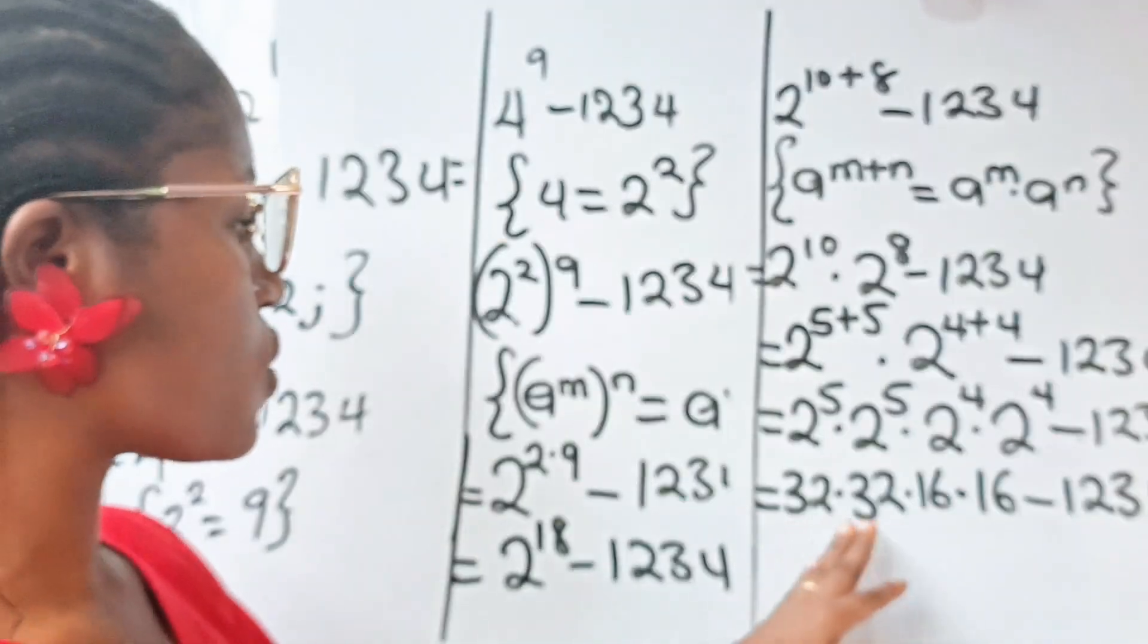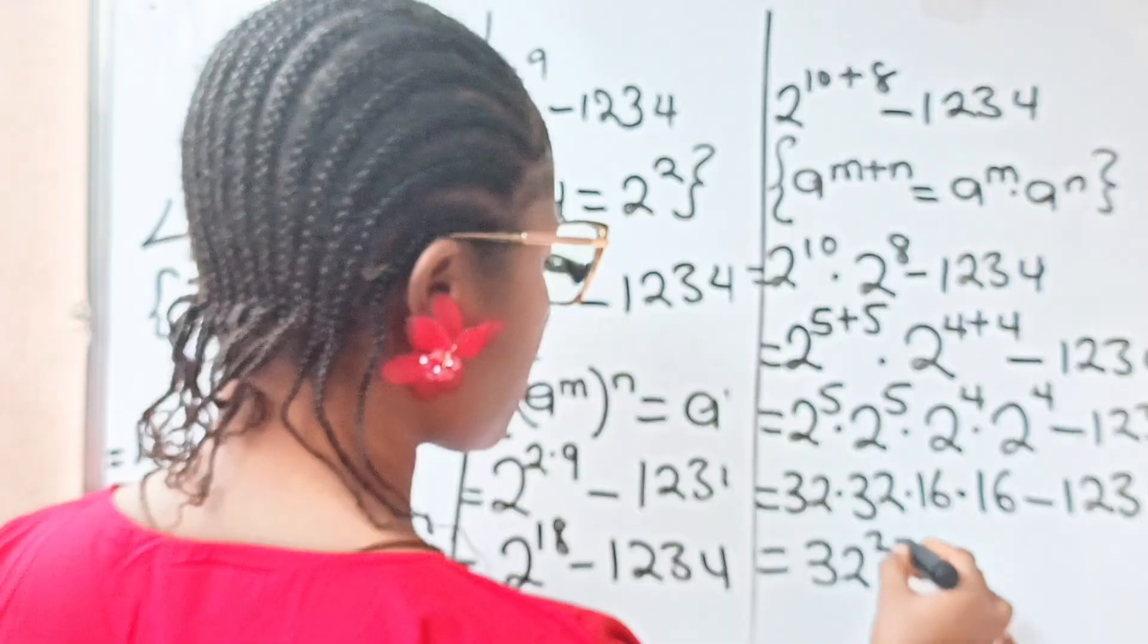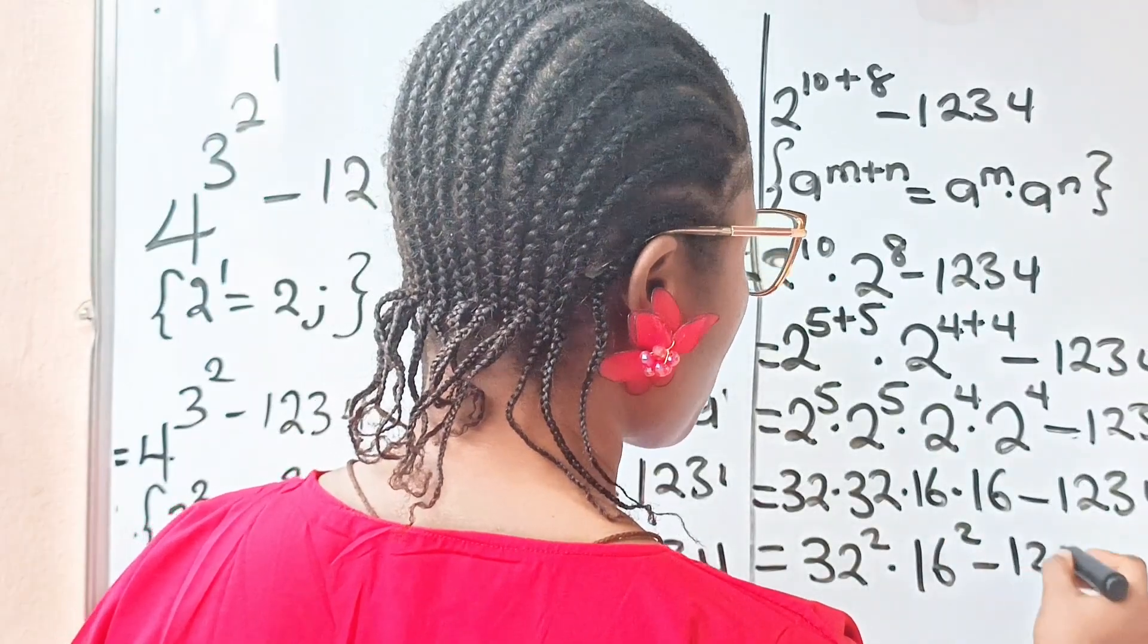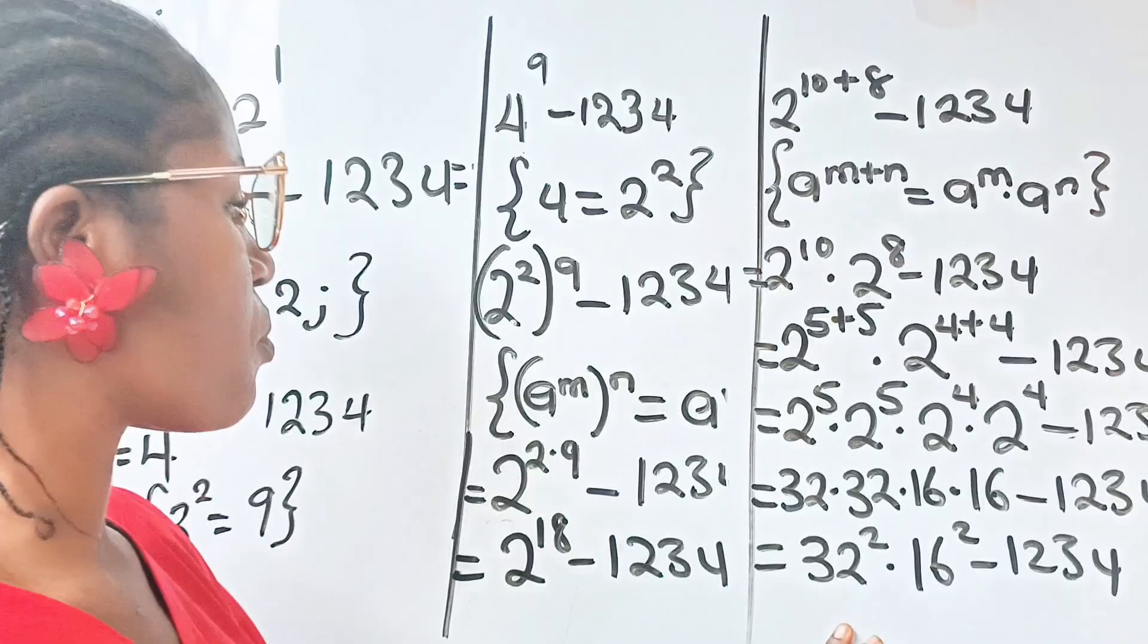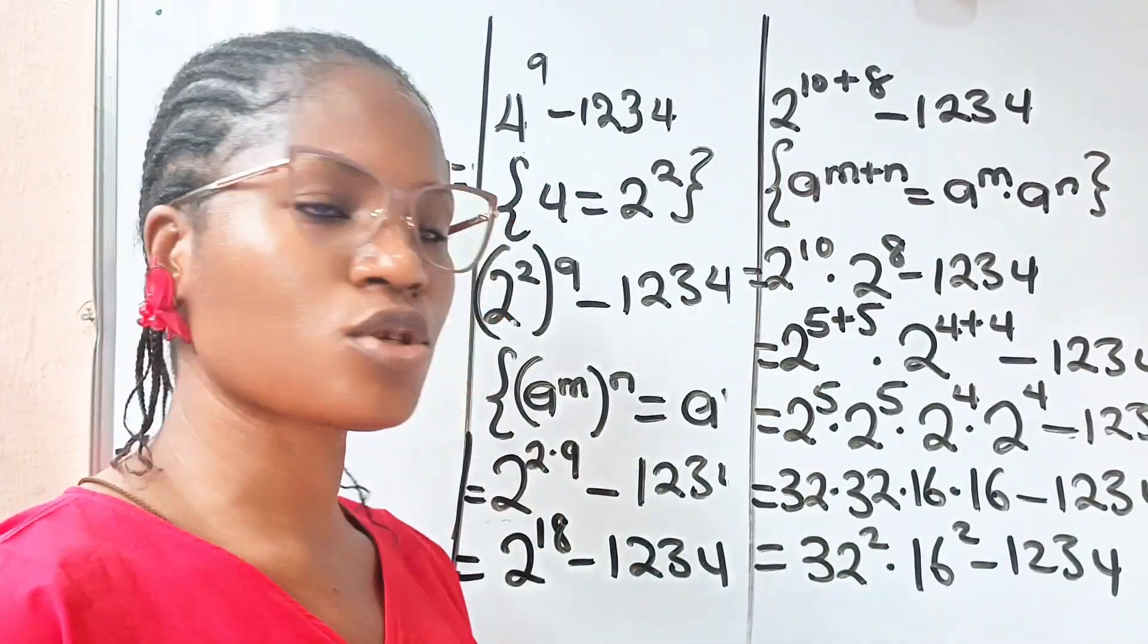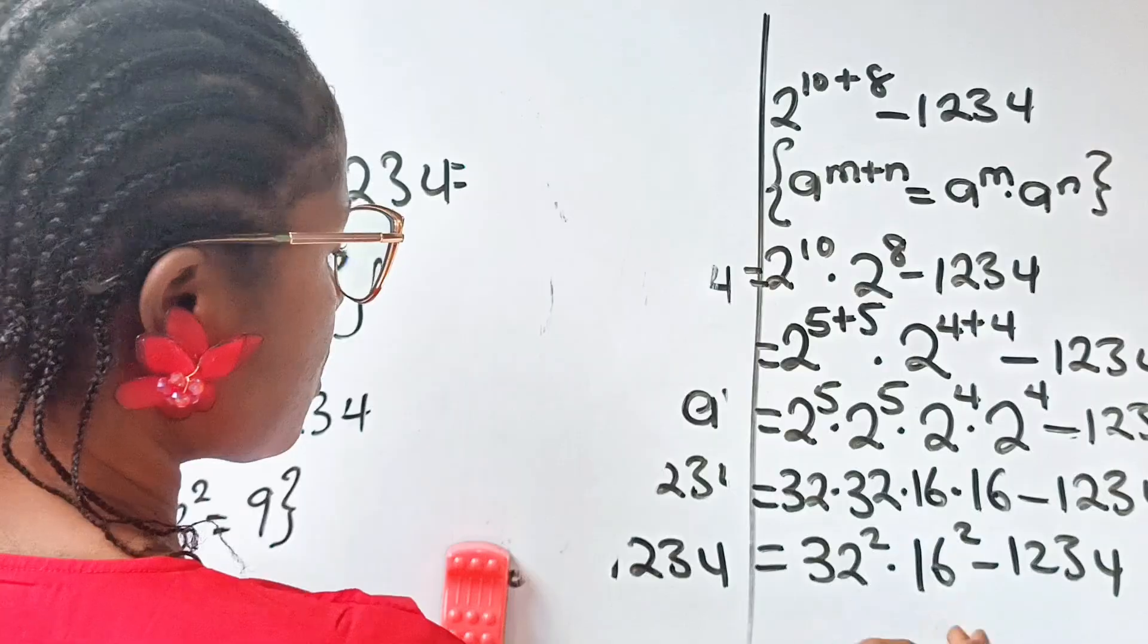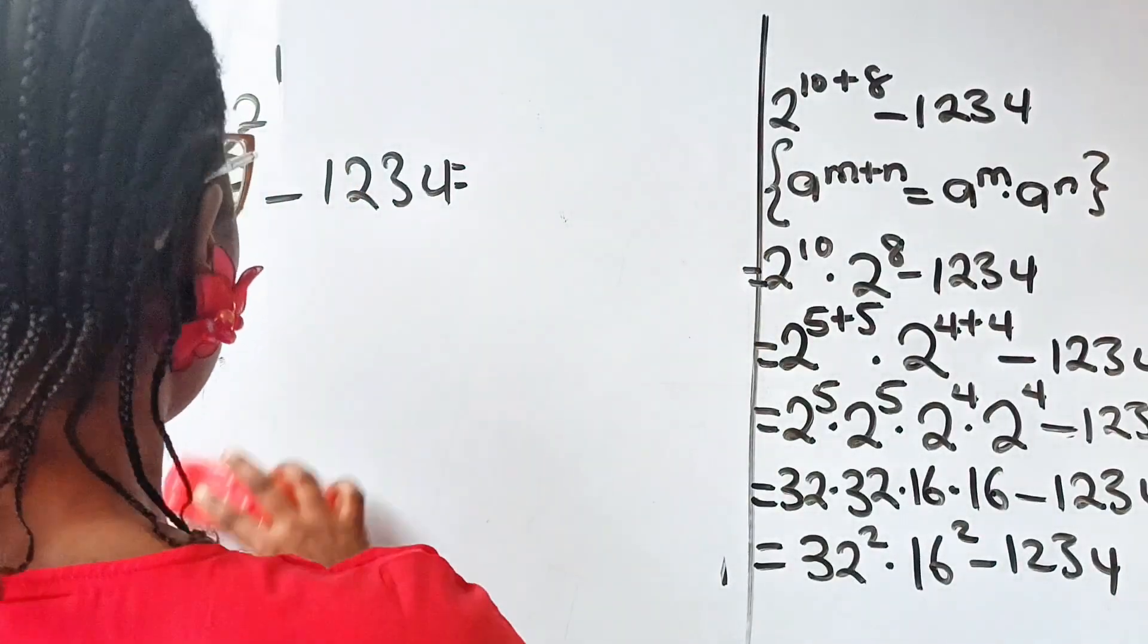Now, at this point, I can easily recollect that 2 to the power of 5 is 32. So, I have 32 multiplied by 32, multiplied by 2 to the power of 4 is 16. So, I have 16 multiplied by 16, minus 1234. So, 32 times 32 is the same thing as 32 squared, multiplied by 16 multiplied by 16 is the same thing as 16 squared, then minus 1234.